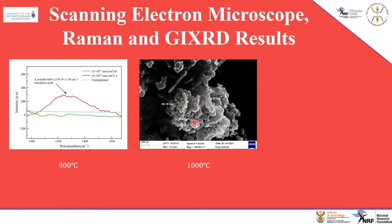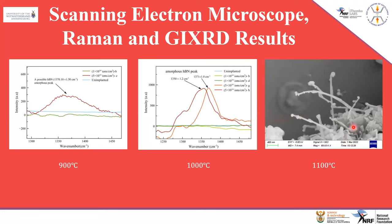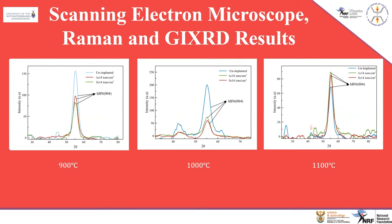For the 1000°C samples, Raman analysis did not detect anything before ion implantation, but after implantation an amorphous peak was noticed, especially at the fluence of 5×10¹⁴. For samples prepared at 1100°C, we clearly managed to synthesize nanotubes on the surface. Raman analysis shows an amorphous h-BN peak before ion implantation, and after implantation this peak is more sharp — indicating crystallization. There is also a characteristic vibrational frequency mode peak of boron nitride nanotubes, confirming their presence on the surface.